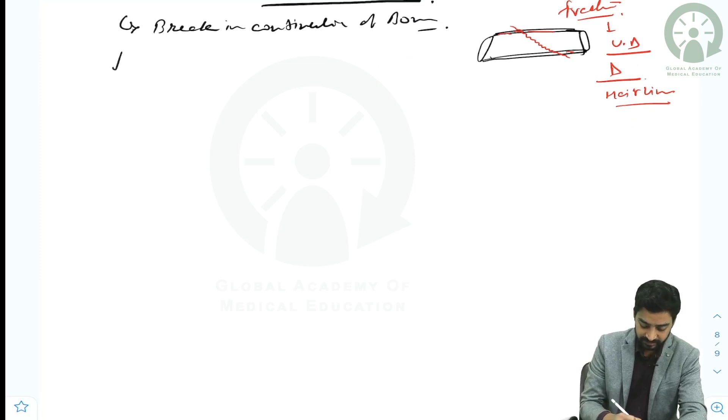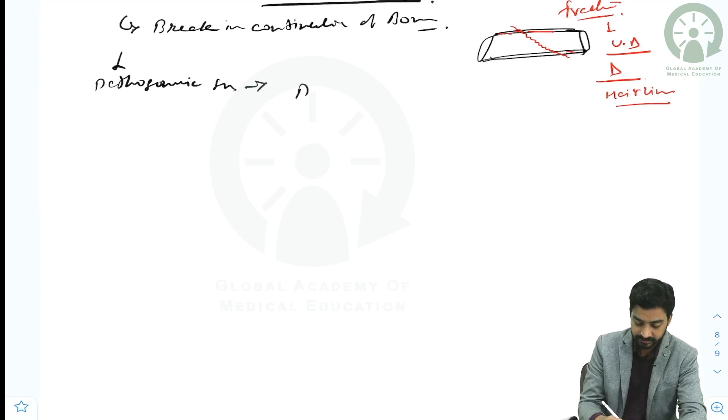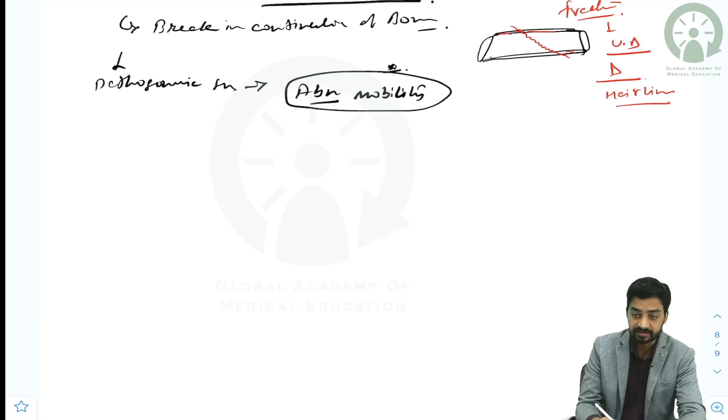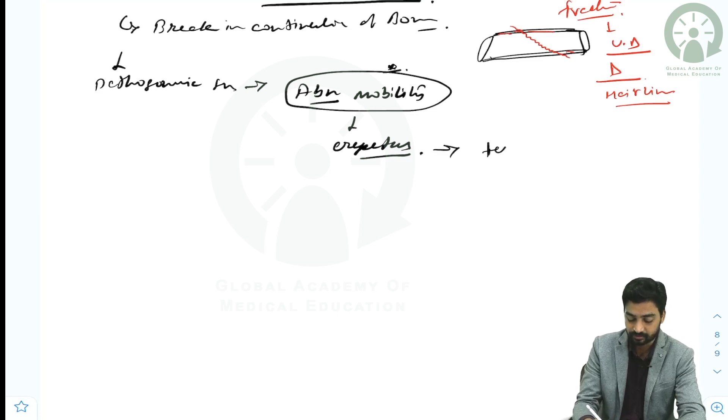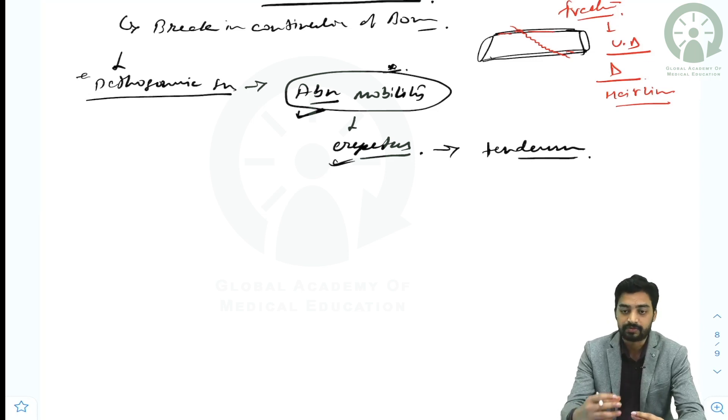If a fracture happens, what is the pathognomonic symptom? It is known as abnormal mobility. If it is not in the option, then go with crepitus. If that's not in the option, then go with tenderness. So the pathognomonic symptom is abnormal mobility; if not in the option, then go for crepitus. The two parts move and produce crepitus.